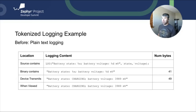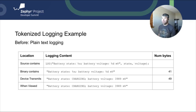Let's go over an example of tokenized logging to see the space savings impact of tokenization. Here we have a logging statement of the battery state and the current voltage. The state argument is a string and the voltage is an integer value. When you compile for regular plain text logging, the binary will contain this format string which takes up 41 bytes. The logging module will expand the arguments to create a final string transmitted to your terminal — the battery is charging and has a voltage of 3989 millivolts. 49 bytes are transmitted in this scenario.